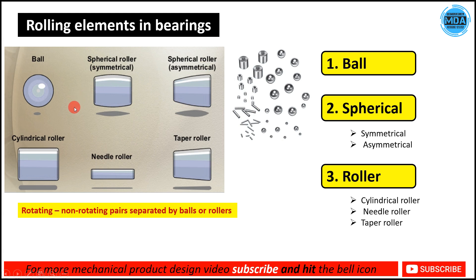The purpose of the rolling element is to transfer the load from the inner ring to the outer ring. When a bearing is mounted on the shaft, the load first comes on the inner race, then through the rolling elements it transfers to the outer ring and then to the housing. The rolling elements also allow motion — they allow the inner ring to rotate while the outer ring remains fixed.